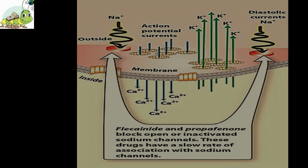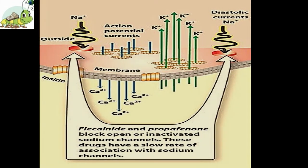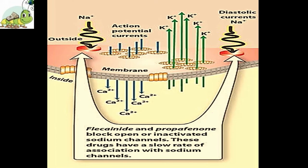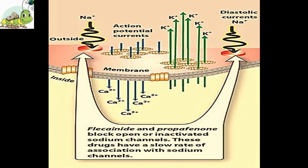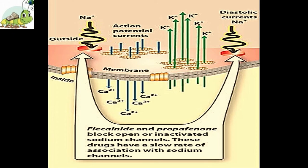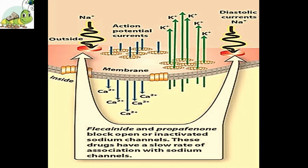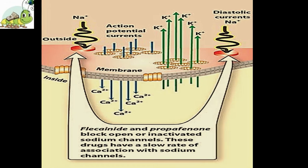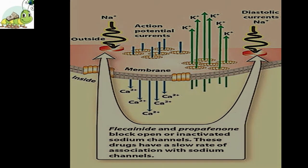Electrocardiographic changes: Propafenone causes dose-dependent increases in the PR and QRS intervals. Hemodynamic effects: IV administration of propafenone is accompanied by an increase in right atrial, pulmonary arterial, and pulmonary artery wedge pressure, in addition to an increase in ventricular resistance and a decrease in the cardiac index. A significant decrease in ejection fraction may be observed in patients with pre-existing left ventricular dysfunction. In the absence of cardiac abnormalities, propafenone has no significant effects on cardiac function.